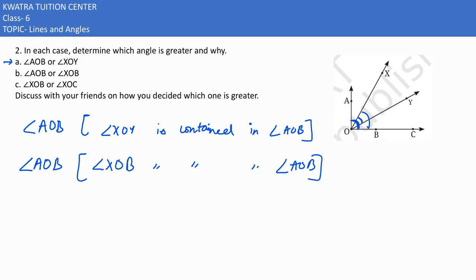In the third situation we have XOB and XOC. Now XOB and XOC are equal to each other. They are both the same here. Here they have just written C in place of B, so the ray is just extended. That's it. So both of the angles we can say are equal because they are formed with the same rays.